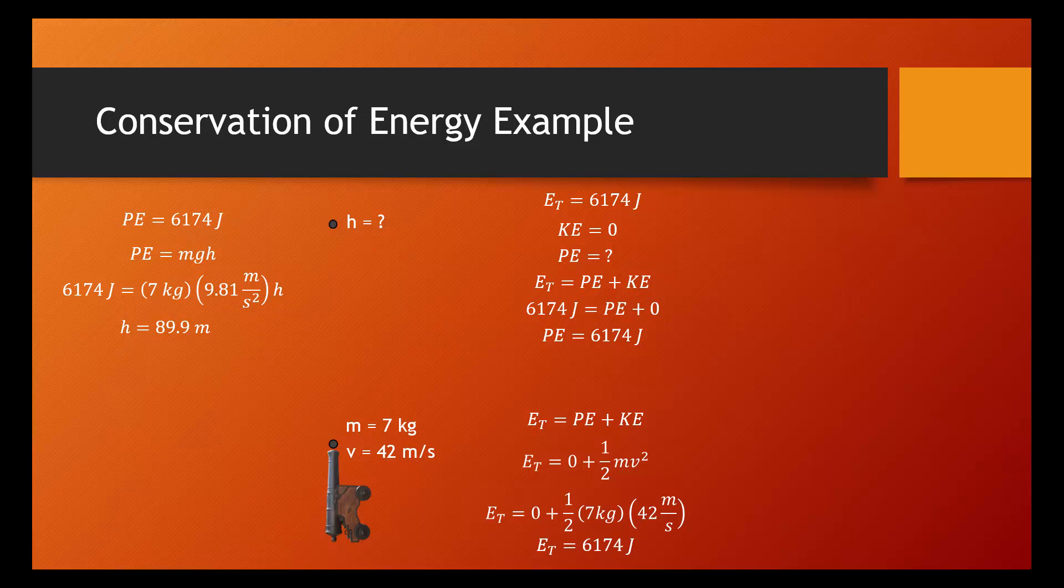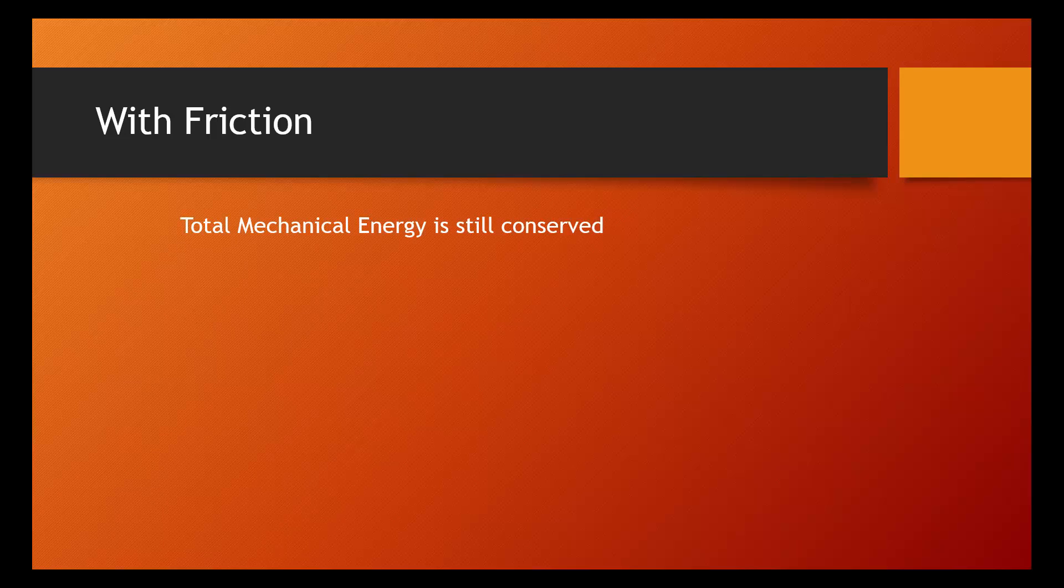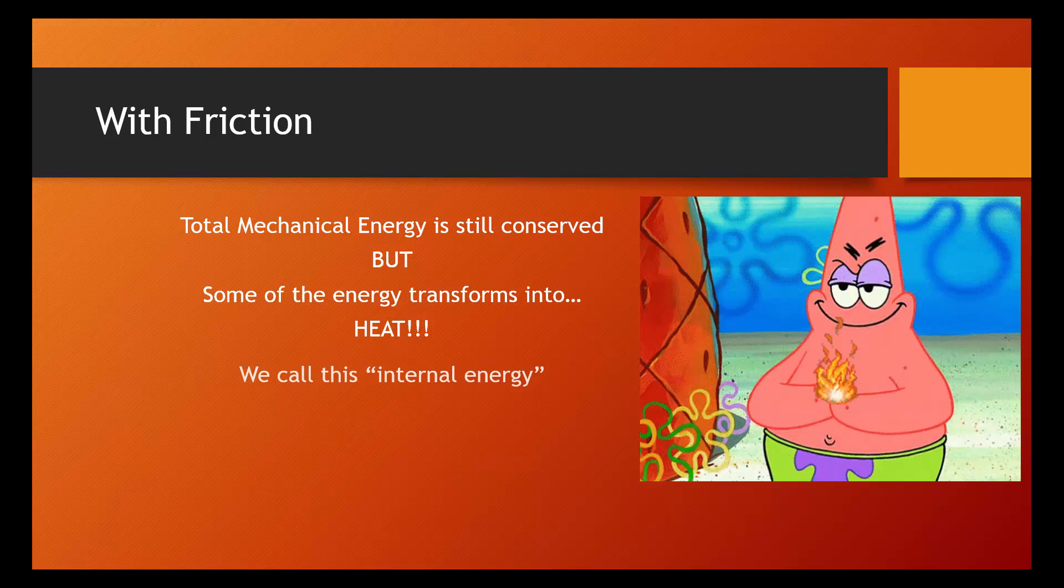This is just one of many different examples we could have looked at, and of course, we'll practice a lot more of them in class. Now let's look at what happens when we include friction in our conservation of energy situations. So let's start by making it clear, total mechanical energy is still going to be conserved. That is a law of nature. But now some of the energy is going to transform into heat. We're going to call this internal energy. This is energy that is contained in the molecules of the object.